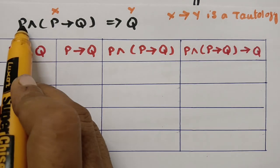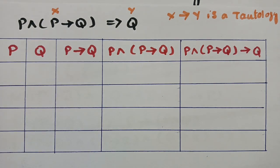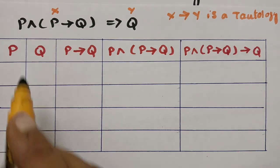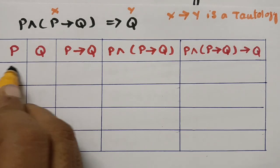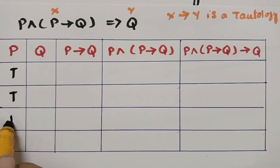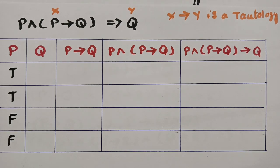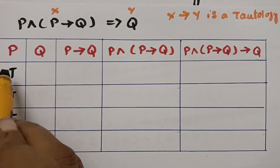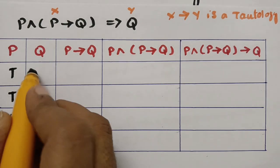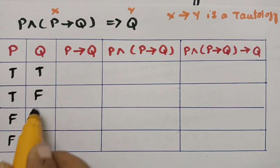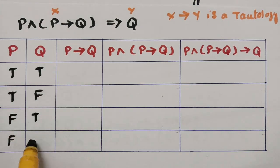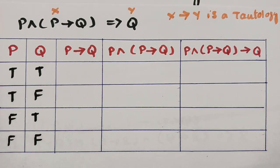There are only two propositions, p and q. So we write: true true, true false, false true, false false — two trues and two falses for each proposition.